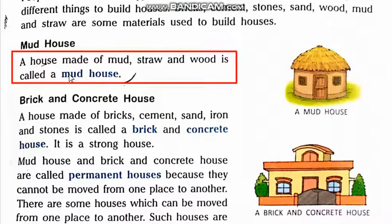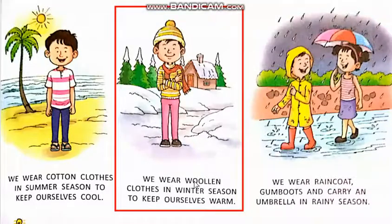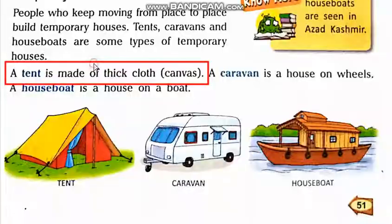A house made of mud, straw, and wood is called a mud house. We wear woolen clothes in winter season to keep ourselves warm. A tent is made of thick cloth, which is called canvas.